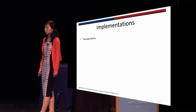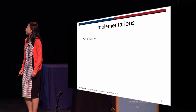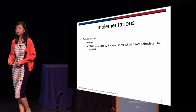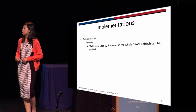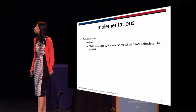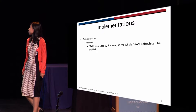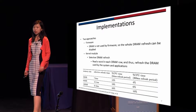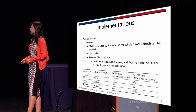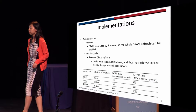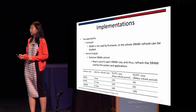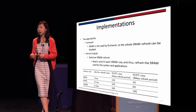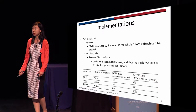So we have two approaches to implement the DRAM PUF. First, we implement this in firmware. Firmware is the first piece of software running on a device, and it is not using the DRAM — it actually uses the on-chip cache. So we can safely disable the DRAM refresh and access the PUF. In another approach, we implement this in a kernel module. To prevent data used by the system from being lost, in one scenario we can locate the operating system in one part of DRAM and disable refresh for the PUF region, which we can achieve on the PandaBoard.